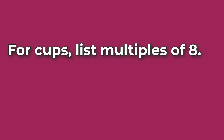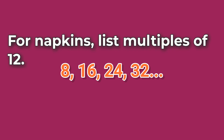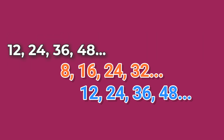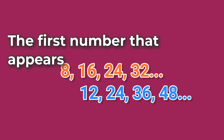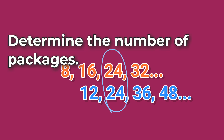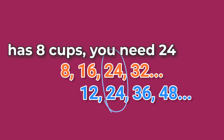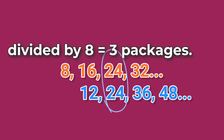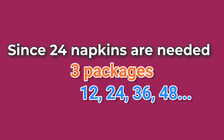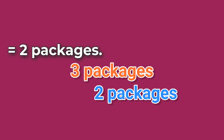List the multiples. For cups, list multiples of 8. For napkins, list multiples of 12: 12, 24, 36, 48. The first number that appears in both lists is 24. Determine the number of packages: for cups, since 24 cups are needed and each package has 8 cups, you need 24 divided by 8 equals 3 packages. For napkins, since 24 napkins are needed and each package has 12 napkins, you need 24 divided by 12 equals 2 packages.